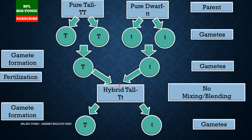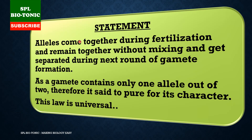In this flowchart we can understand two laws: the law of dominance and the law of segregation. Up to the capital T small t combination, that illustrates the law of dominance — capital T is expressed and small t is suppressed. During gamete formation the alleles get separated — that is the law of segregation.